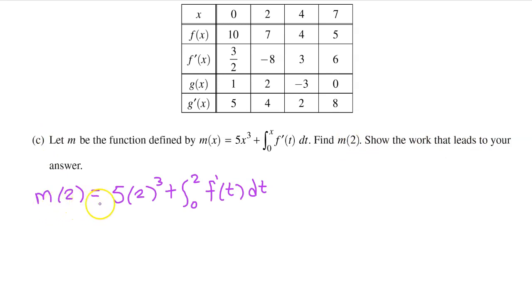To find m at 2, we start by substituting 2 for both of these x's. Notice that we do not substitute anything for these t's. This is sort of a dummy variable. 2 to the third power is 8 and 8 times 5 is 40. That brings us to this definite integral.